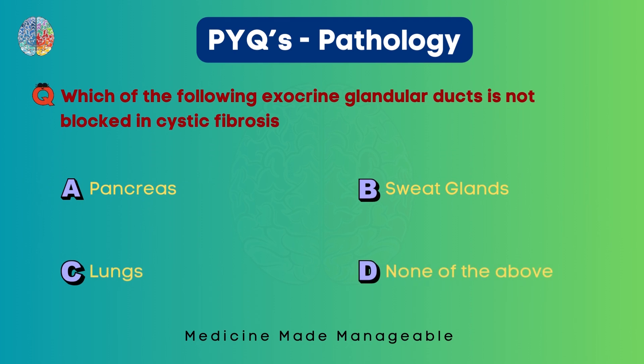Which of the following exocrine gland ducts is not blocked in cystic fibrosis? Is it pancreas, sweat glands, lungs, or none of the above? So let's try to understand what cystic fibrosis is.